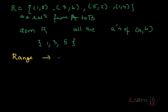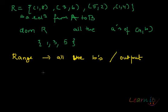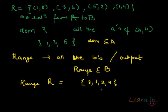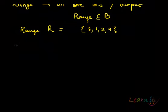Now let's talk about the range. The range essentially would be all the B's — the output — all the B's from set B. The output of the relation is all B's. Domain is a subset of A; similarly, range is a subset of B. So range of R in this example would be {8, 6, 2, 4}. That's the range of this relation.